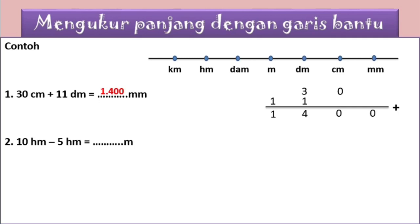Untuk soal yang kedua: 10 hektometer dikurangi 5 hektometer, nolnya kita letakkan di hektometer dan angka satunya mengikuti di depannya. Kemudian 5 hektometer langsung kita letakkan di hektometer juga. Langsung kita kurangi karena soalnya dikurangi. Nol dikurangi 5 tidak bisa, jadi pinjam ke depannya: 10 dikurangi 5 adalah 5. Karena yang diminta dalam bentuk meter, berarti kita tambahkan nol sampai desimeter, tambahkan dua nol. Jadi hasilnya adalah 500 meter. Mudah kan?